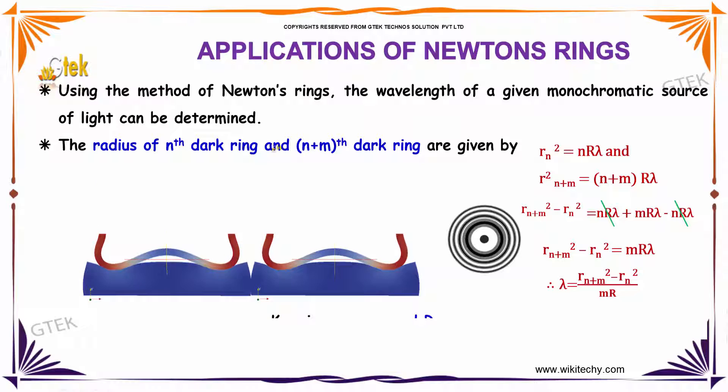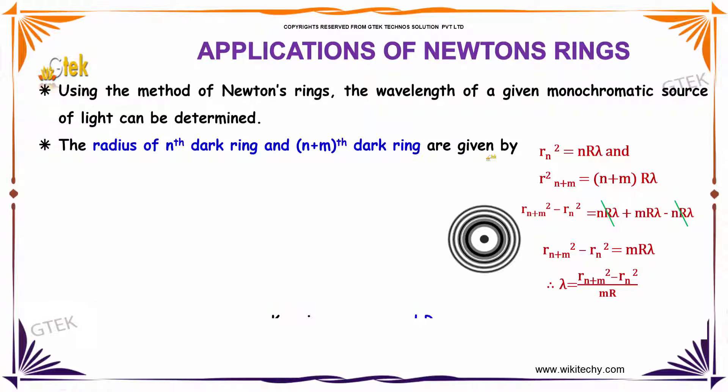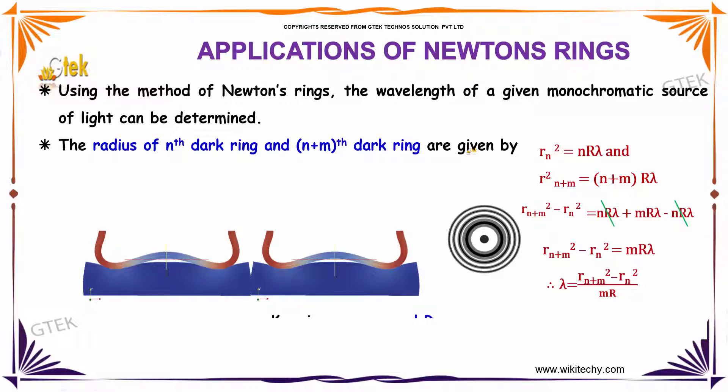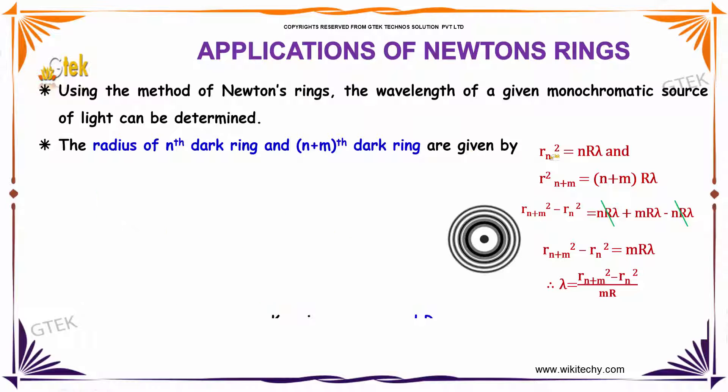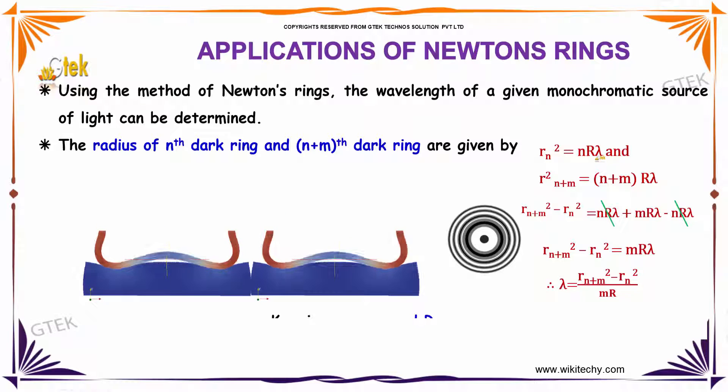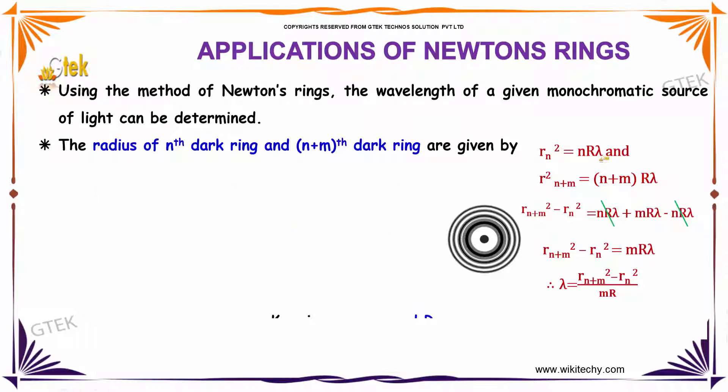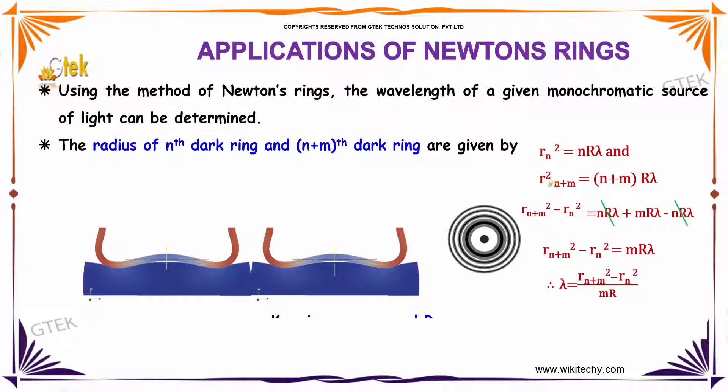The radius of nth dark ring and n plus mth dark ring can be given. From these, we are able to identify rn square is equal to n r lambda. So that rn plus m square is equal to n plus m r lambda.